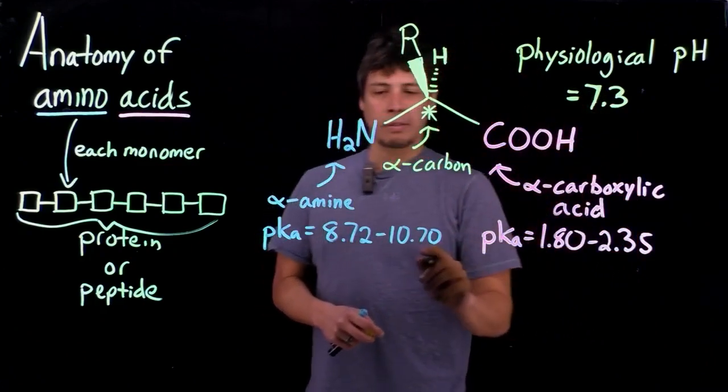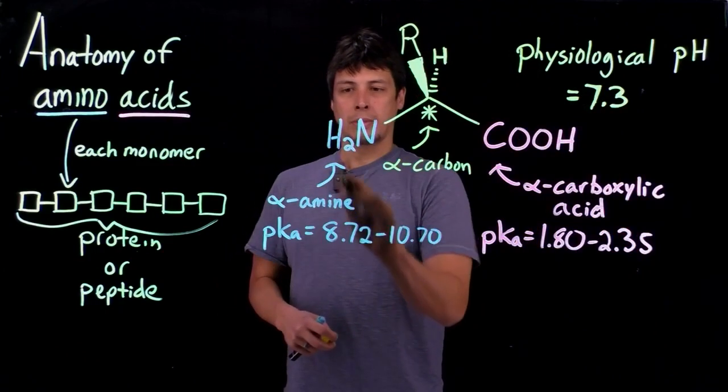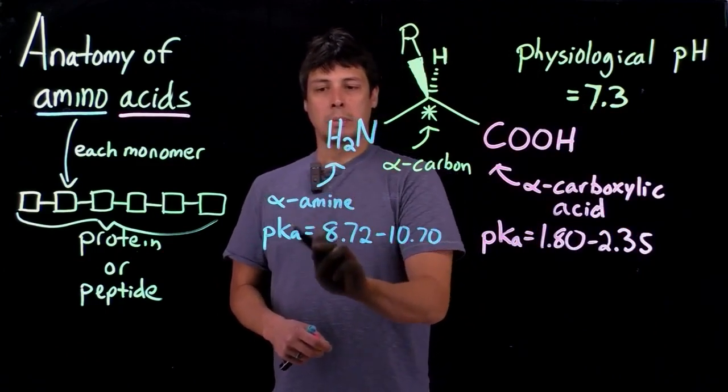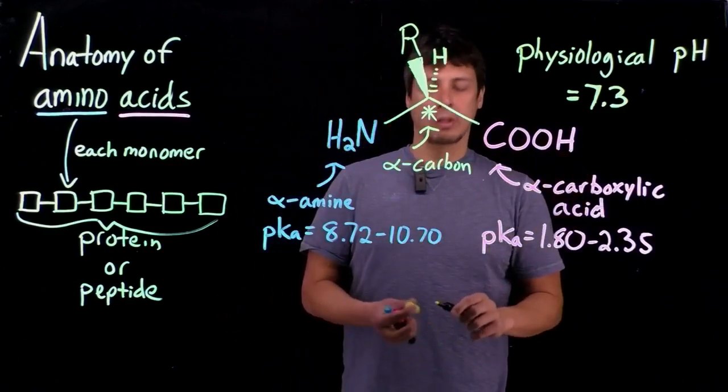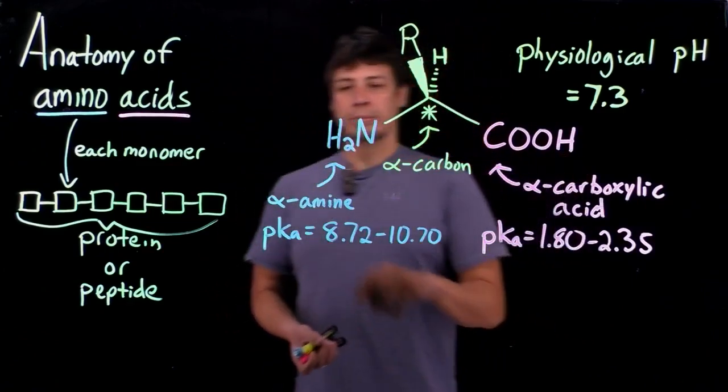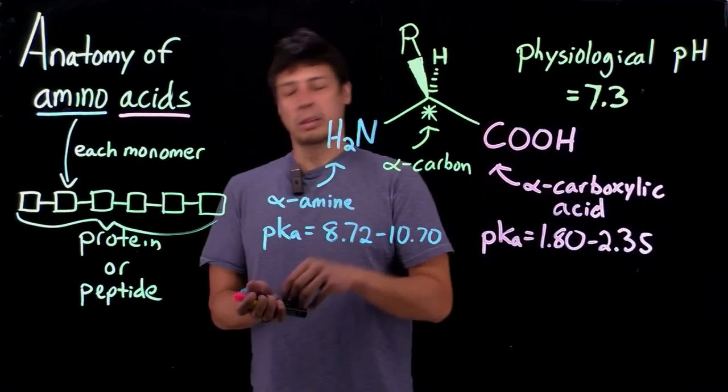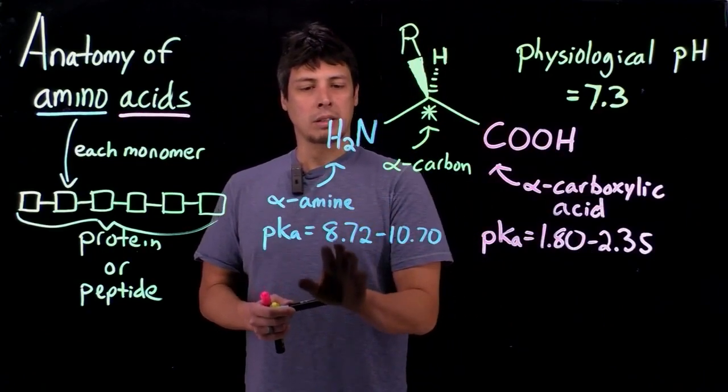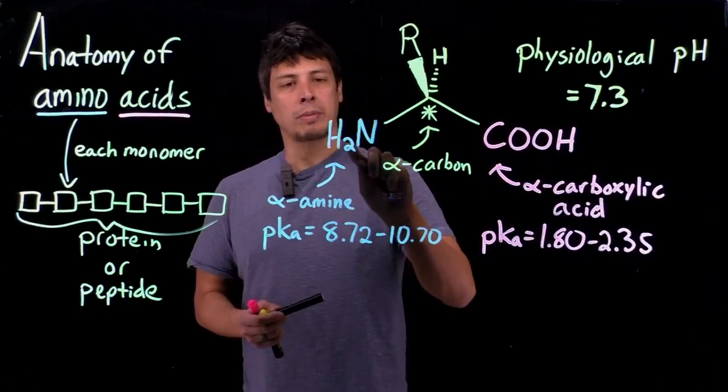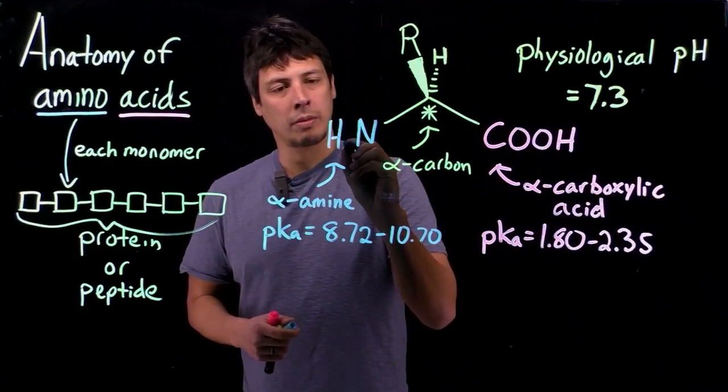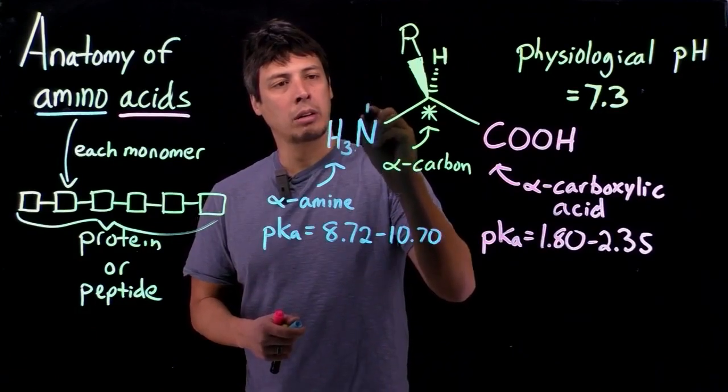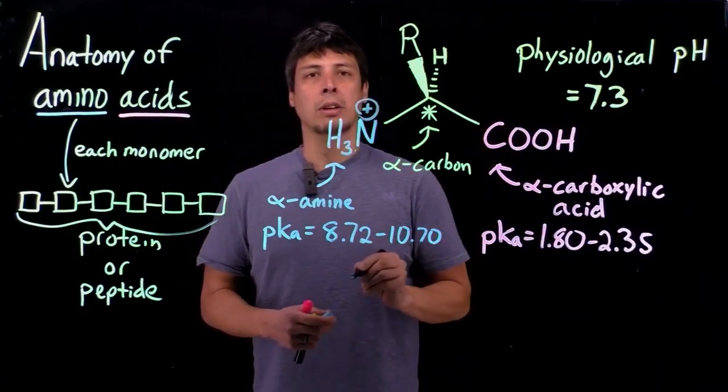So, this pH of 7.3 lies in between, below the pKa range for the amine, and above the pKa range for the carboxylic acid. So, looking at the amine, what that means is that since the pKa is below this range, typically, under these conditions, the amine will be protonated and carry a positive charge.